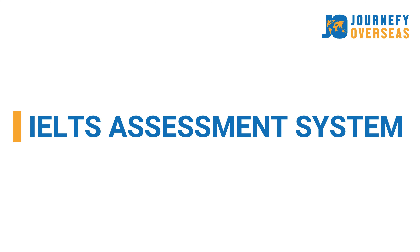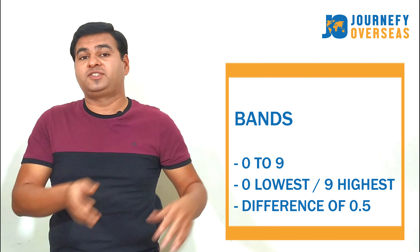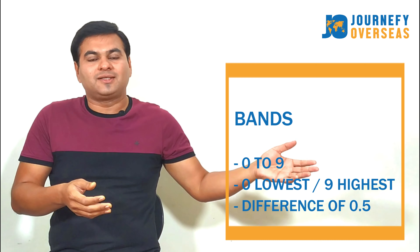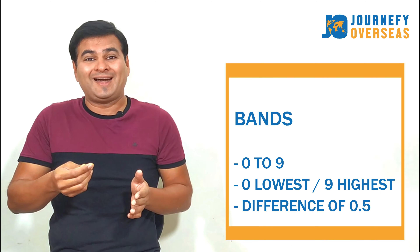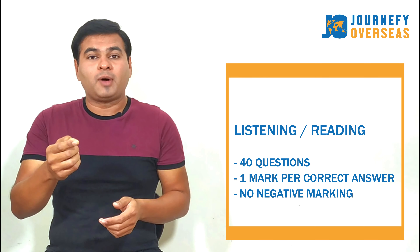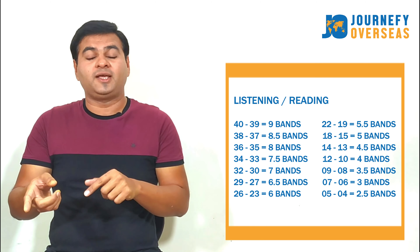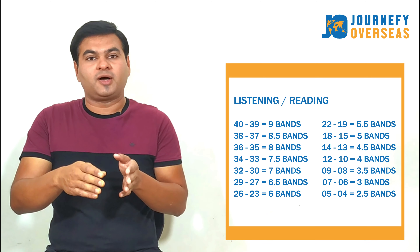So that is how the IELTS examination is conducted. There is another video in which I have explained in depth about the examination format for all four skills — the link is in the description box. Now let me explain how assessment is done for IELTS. The markings are given in a band system ranging from 0 to 9, where 0 is the lowest and 9 is the highest. You will get separate bands for each skill, and bands are in increments of 0.5 — so you can get 6, 6.5, 7, 7.5 bands and so on. In listening and reading, since there are 40 questions, you get 1 mark for each correct answer with no negative marking. Scoring 39 to 40 correct answers gives you 9 bands, and 37 to 38 correct answers gives you 8.5 bands, and so on.